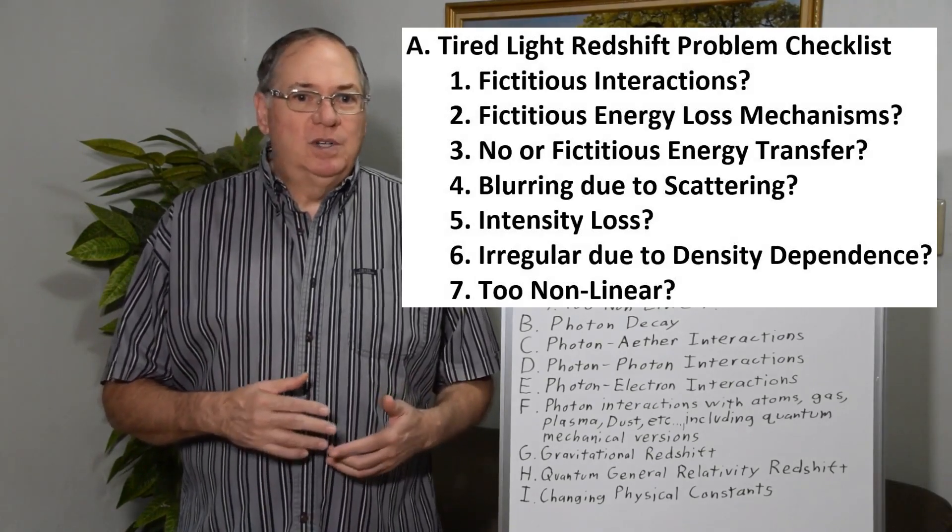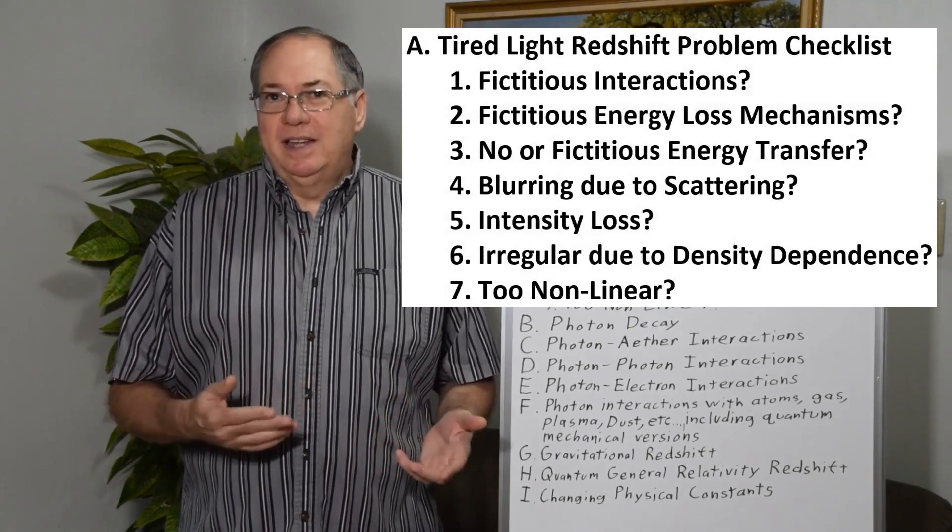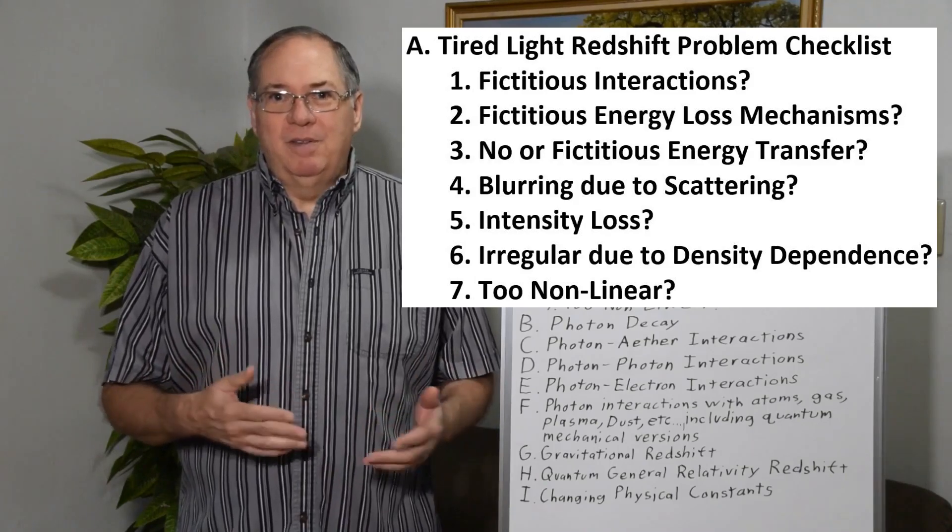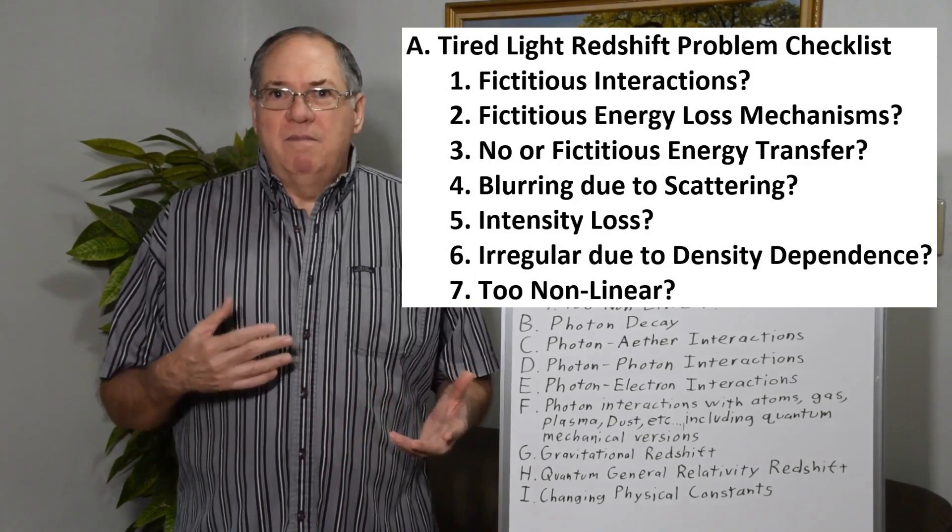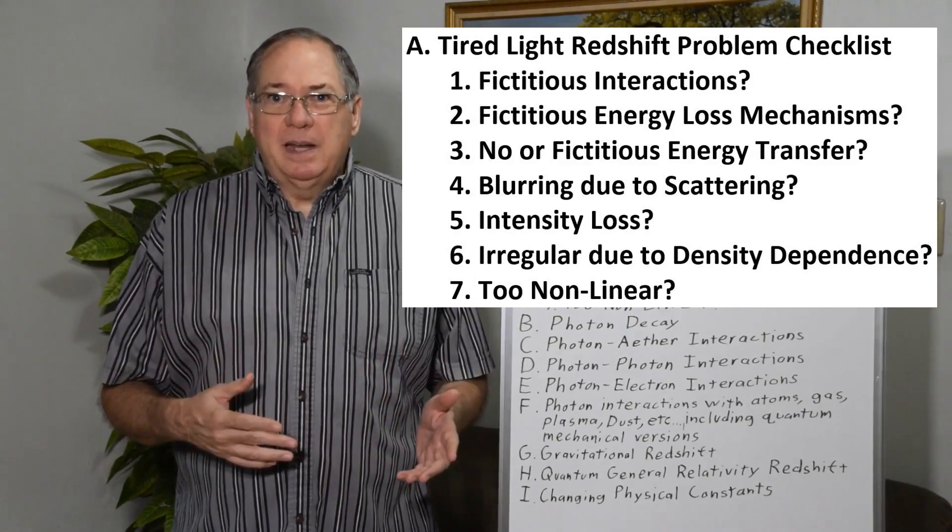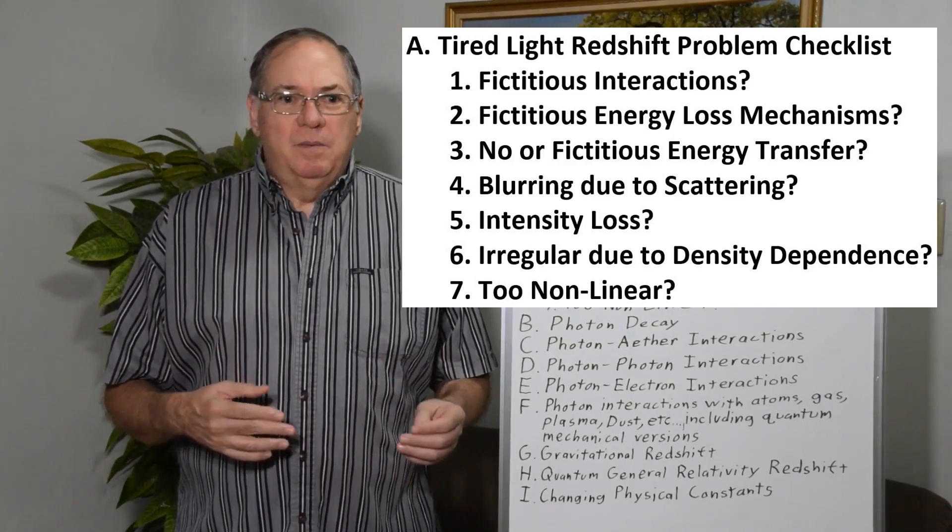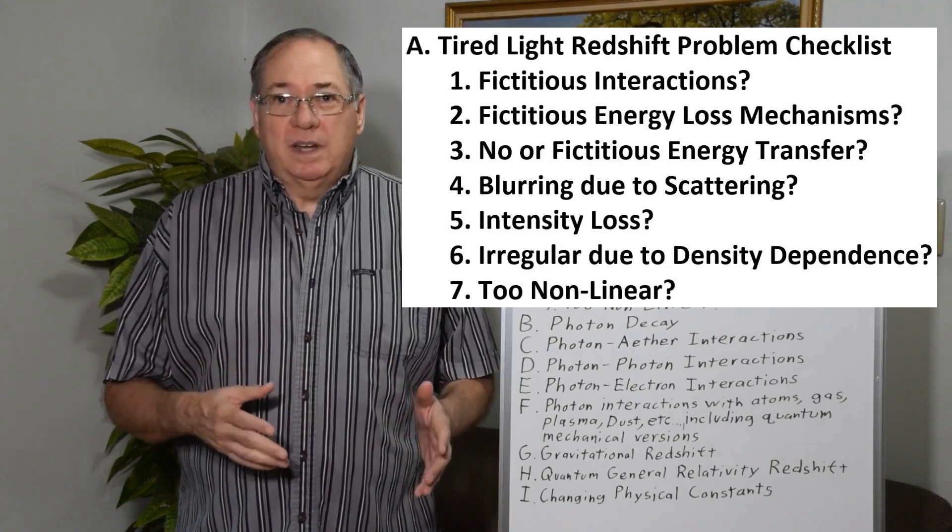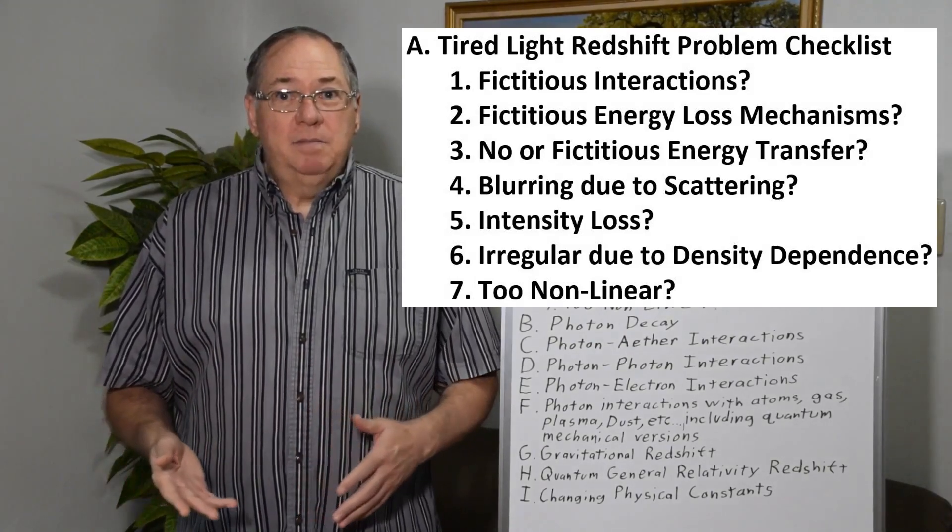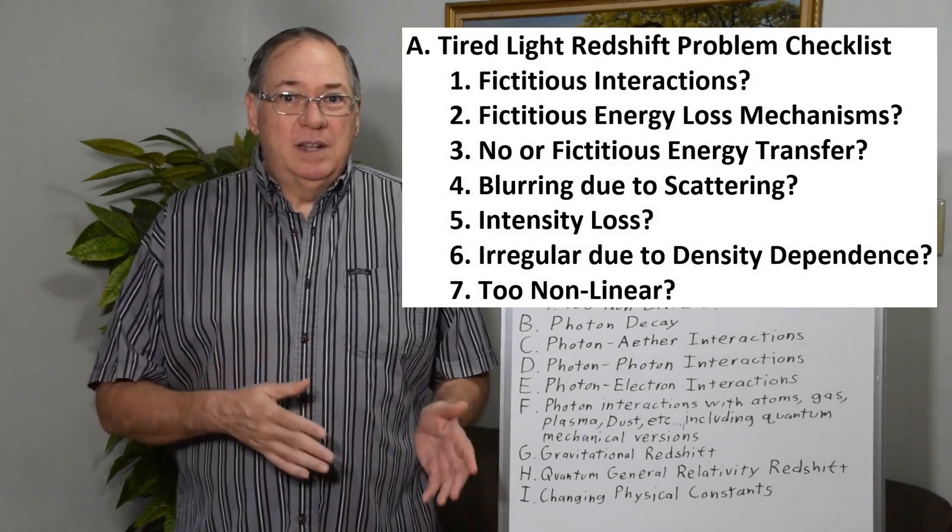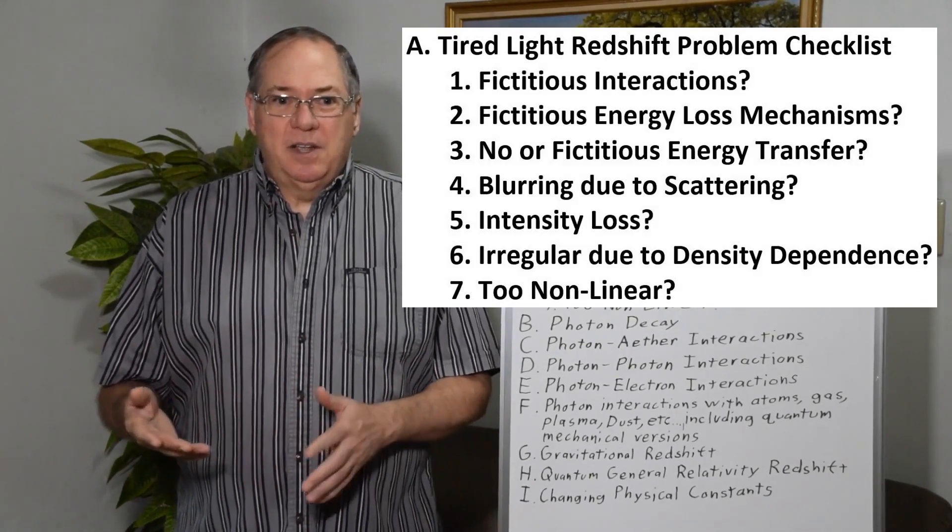The first thing I look for is fictitious interactions, things that we've never heard of actually occurring in real physics, fictitious energy loss mechanisms. We also have either no or fictitious energy transfer mechanisms, because if photons lose energy, the energy has to go someplace.